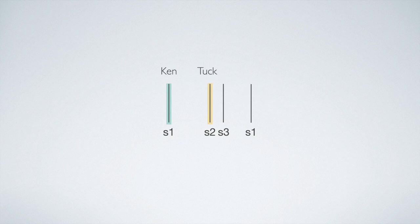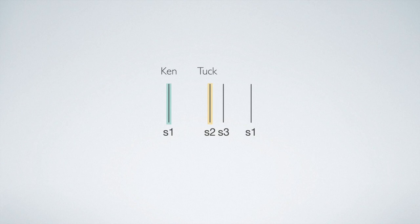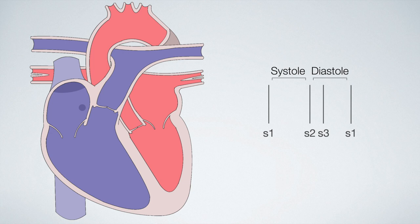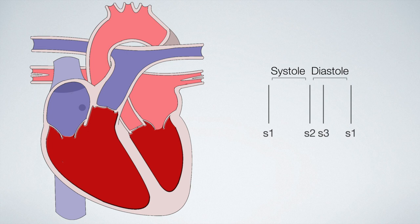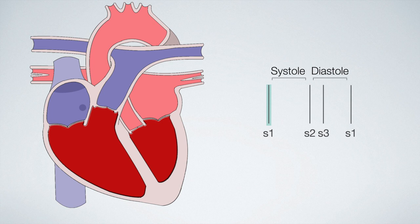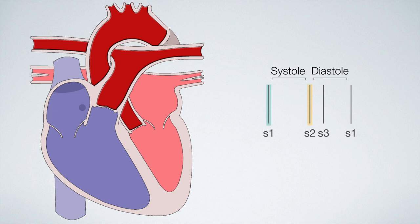To better understand how the S3 heart sound occurs we have to add in some blood flow to our animation. The first heart sound is caused by the closure of the tricuspid and mitral valves and the second heart sound is caused by the closure of the pulmonary and aortic valves. The S3 heart sound is produced by the rapid filling of the ventricles during diastole. This produces audible vibrations which are heard as the S3 heart sound. Let's now add the heart sounds to the animation. We're going to start in slow motion but then we'll speed it up to real time.